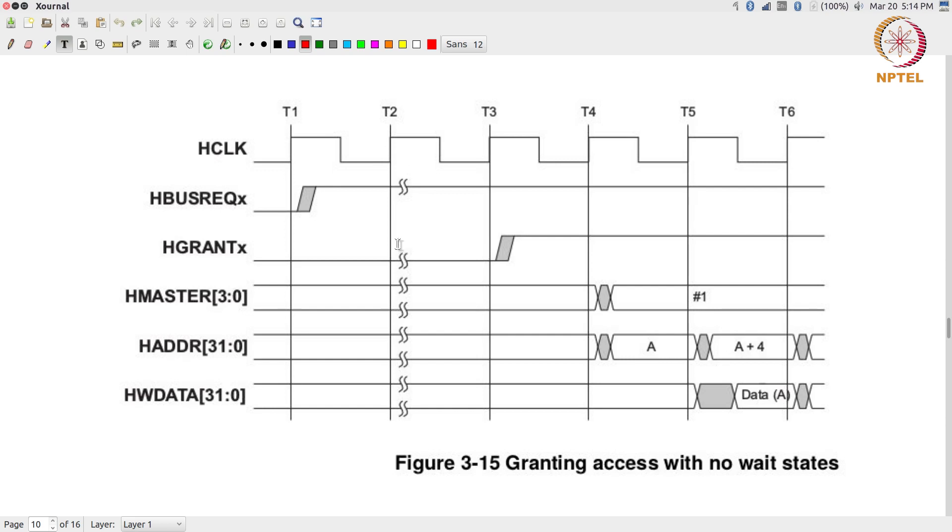Now, these squiggly lines over here are used to indicate that T2 may not be the next clock cycle after T1, or rather T3 may not be the next clock cycle after T2. There could be any number of states in between over here before the grant signal actually becomes high. Why might that happen? Usually because somebody else is using the bus.